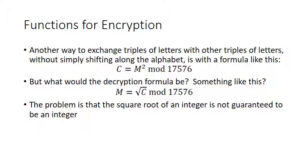For example, instead of adding a number to M, what if you squared it and then modded by 17,576? This is superior to just shifting down the list. But the problem is: how are you going to decrypt this? If you want to undo the operation of squaring, so far in your math career the only way you know to undo a square is to take a square root — if C is the square of M, then M should be the square root of C.